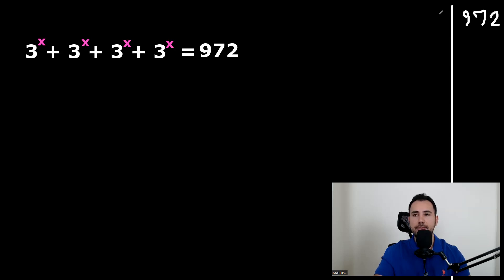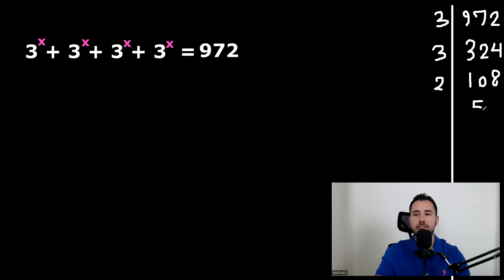972 divided by three would be 324. 324 again divided by three would be 108. 108 divided by two would be 54. 54 again divided by two will be 27. And we know that 27 is three times three, so 27 divided by three would be nine. Dividing it by three would be three. Three divided by three — okay, this would be one. When you reach one, this is the end.